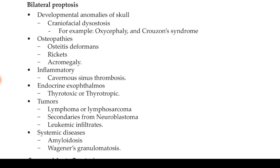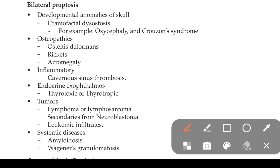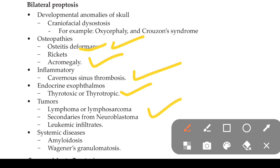For bilateral proptosis: developmental anomalies of the skull like craniofacial dysostosis — for example oxycephaly and Crouzon syndrome. Osteopathies like osteopetrosis, rickets, and acromegaly. Inflammatory causes include cavernous sinus thrombosis. Endocrine causes include thyrotropic and thyrotoxic exophthalmos. Tumors include lymphoma, lymphosarcoma, neuroblastoma, and leukemia.